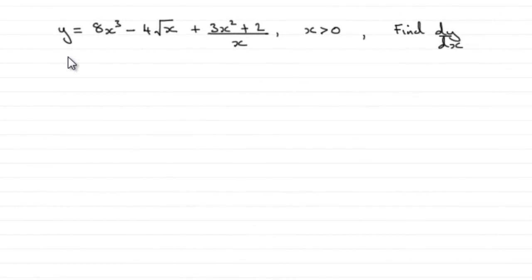Now, for this question, we're given that y equals 8x cubed minus 4 root x plus all of 3x squared plus 2 divided by x, and x has to be greater than 0, and we've got to find dy by dx.